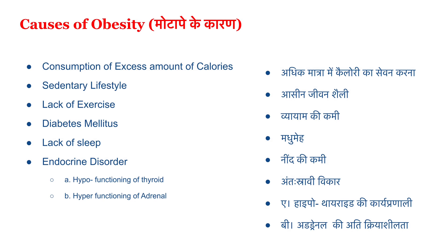Now we are going to discuss the causes of obesity. Number one: consumption of excess calories. When we eat more than the optimal calories, it definitely gets accumulated in muscle cells or body cells as triglycerides, and becomes body fat. Second is sedentary lifestyle — sitting for long or doing no activity — the body is not able to burn the calories we consume, so unburned calories remain and are stored as body fat.